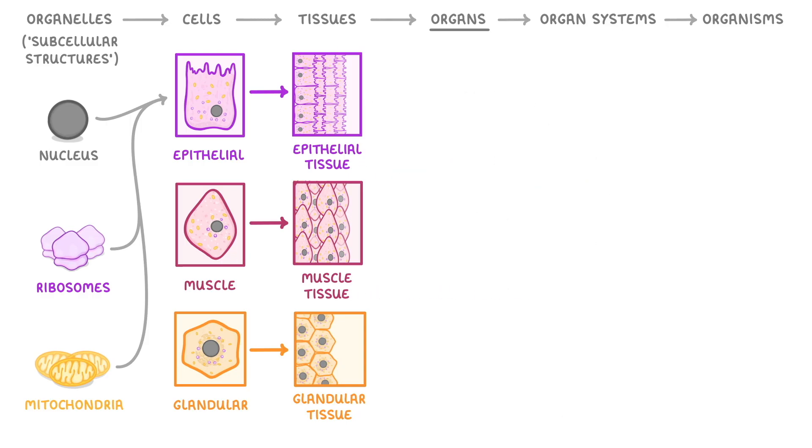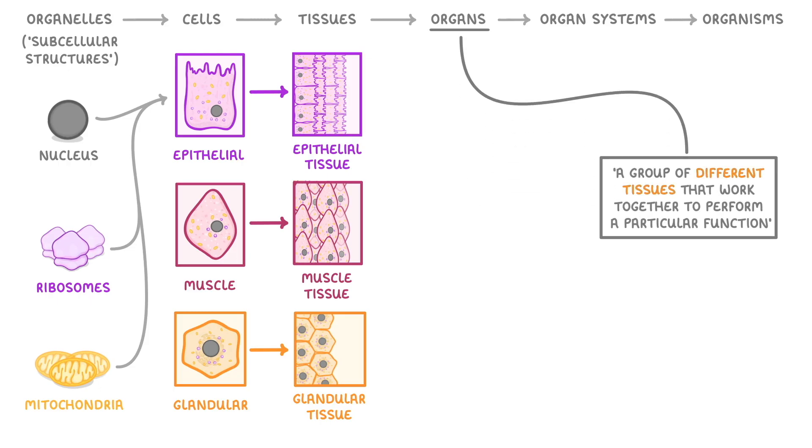The next level is the organ, and the definition of an organ is a group of different tissues that work together to perform a particular function. So as you can see, the definition is pretty much the same as the one for a tissue, except instead of a group of similar cells, it's a group of different tissues.